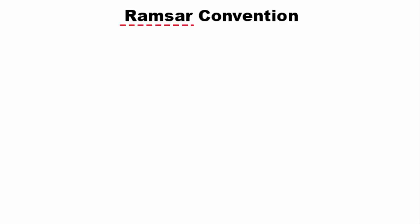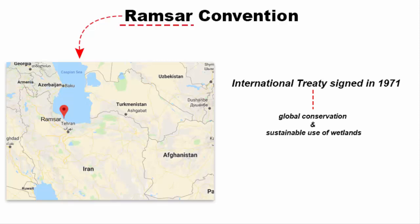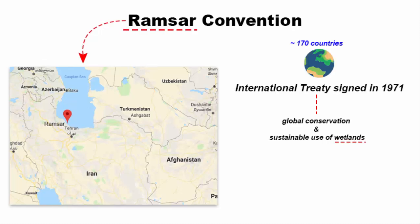When you look at the word Ramsar, at first it might sound as if it is the name of a place in India. One can easily think of this name as being of Indian origin. However, it is not the case — Ramsar is the name of a city in Iran. There was an international treaty signed in 1971 about global conservation and sustainable use of wetlands. As of now, somewhere around 170 countries are part of this treaty, and that's how it is known as the Ramsar Convention.